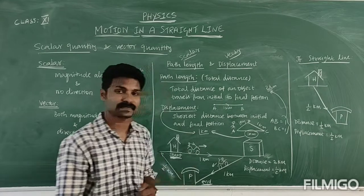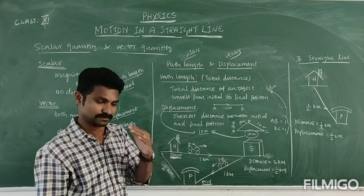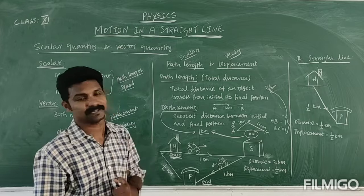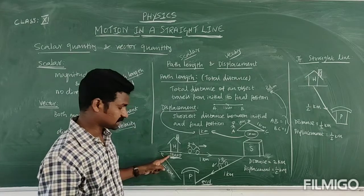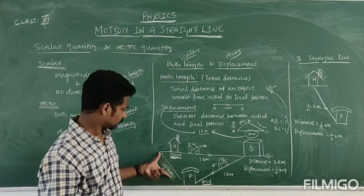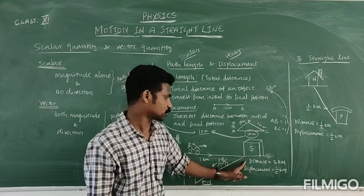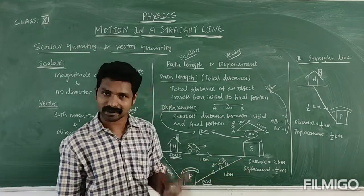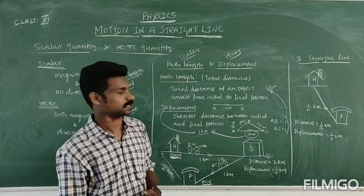But what is the displacement? Displacement is the distance between the initial and final position. Initial position is home, final position is the park. The distance between them is only half a km. So the total distance is 2 km, but the displacement is half a km.